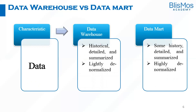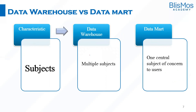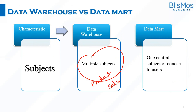In terms of data, the data warehouse has historical data — past data — that is detailed and summarized, and data is lightly denormalized. On the other hand, in a data mart, the data is highly denormalized, meaning we try to have all the data in one table as much as possible by minimizing the number of tables. The data mart has less history and is less detailed compared to the data warehouse. In terms of subjects, the data warehouse will have multiple subjects like product, sales, and accounts, but the data mart will take one of those and make a data mart out of it — one central subject of interest for the users.